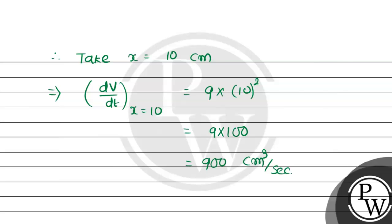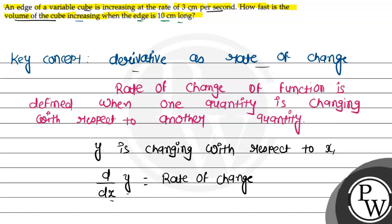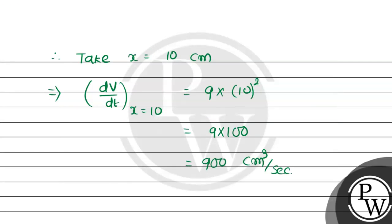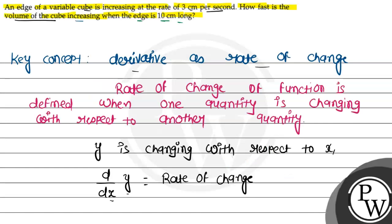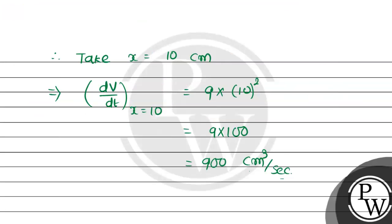The rate of change of volume with respect to time is 900 cm³ per second when the edge length is 10 cm long. This is the solution to the question. I hope the solution helped you. Thank you.